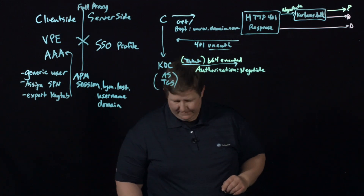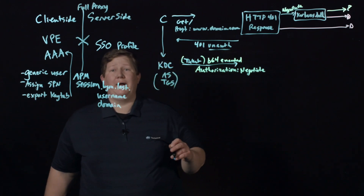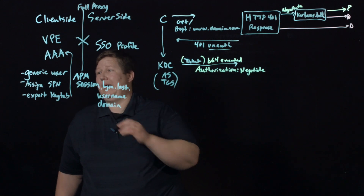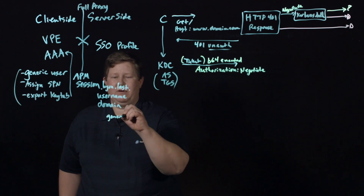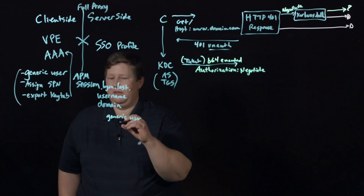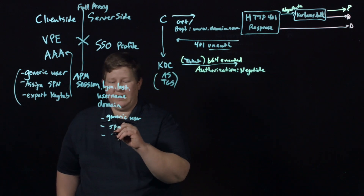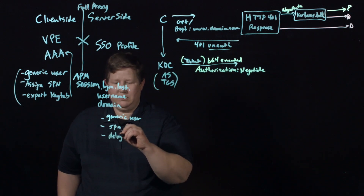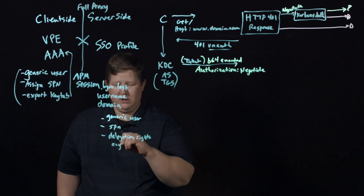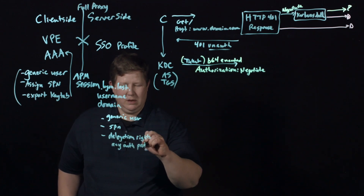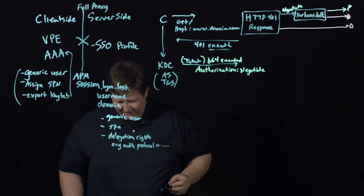Now on the server side, let's go back to our chart. For the SSO profile, on the KDC side we have our generic user with the SPN, and then you set your delegation rights to any protocol — that turns on the protocol transition. On BIG-IP you just have to create this SSO profile.